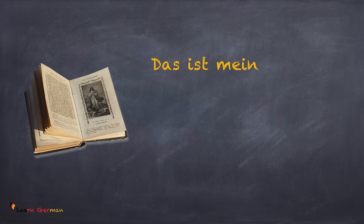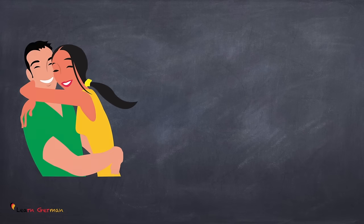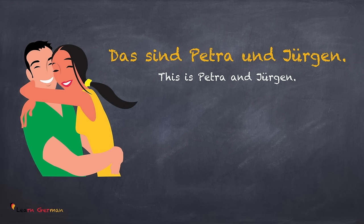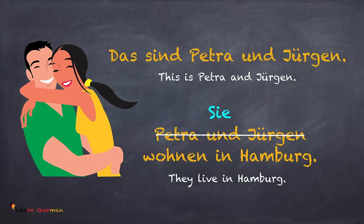Moving on to the next one. Das ist mein Buch. Das Buch ist alt. Using the pronoun here, you would say: Es ist alt. Let's see the plural form now. Das sind Petra und Jürgen. Petra und Jürgen wohnen in Hamburg. Replacing Petra and Jürgen with the pronoun, you would say: Sie wohnen in Hamburg.